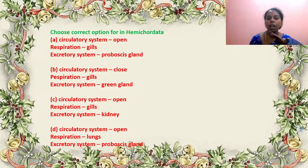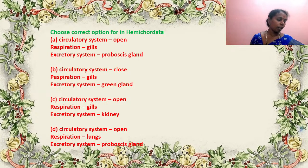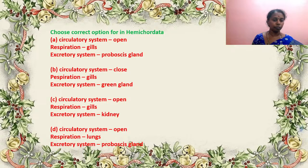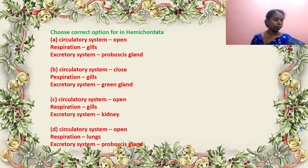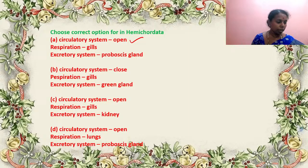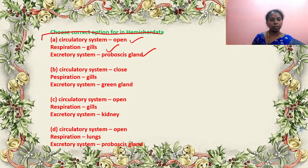We have to find the correct option for hemichordates — you know Balanoglossus and Saccoglossus come under hemichordata. What about their circulatory system? They are aquatic marine animals. Circulatory system is open, and excretion is by proboscis gland. The answer is A.